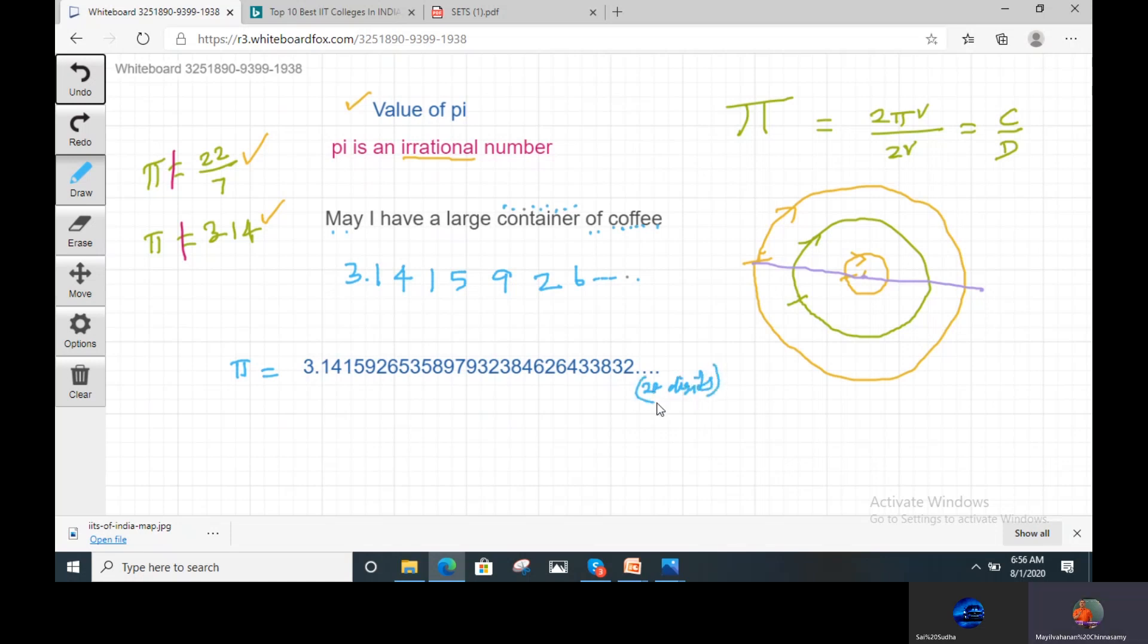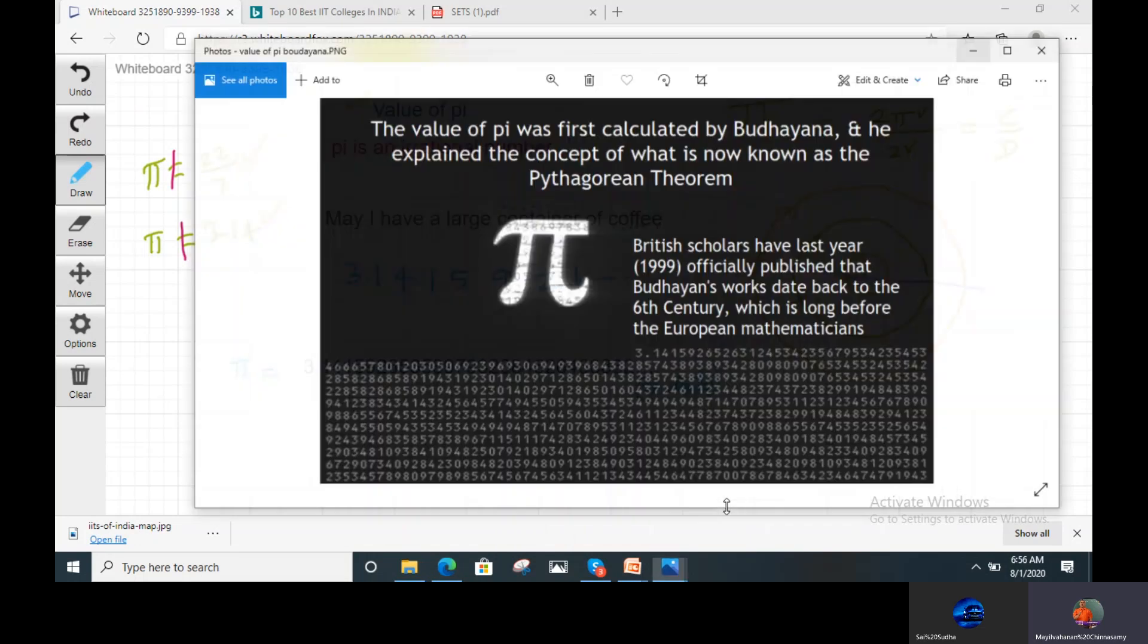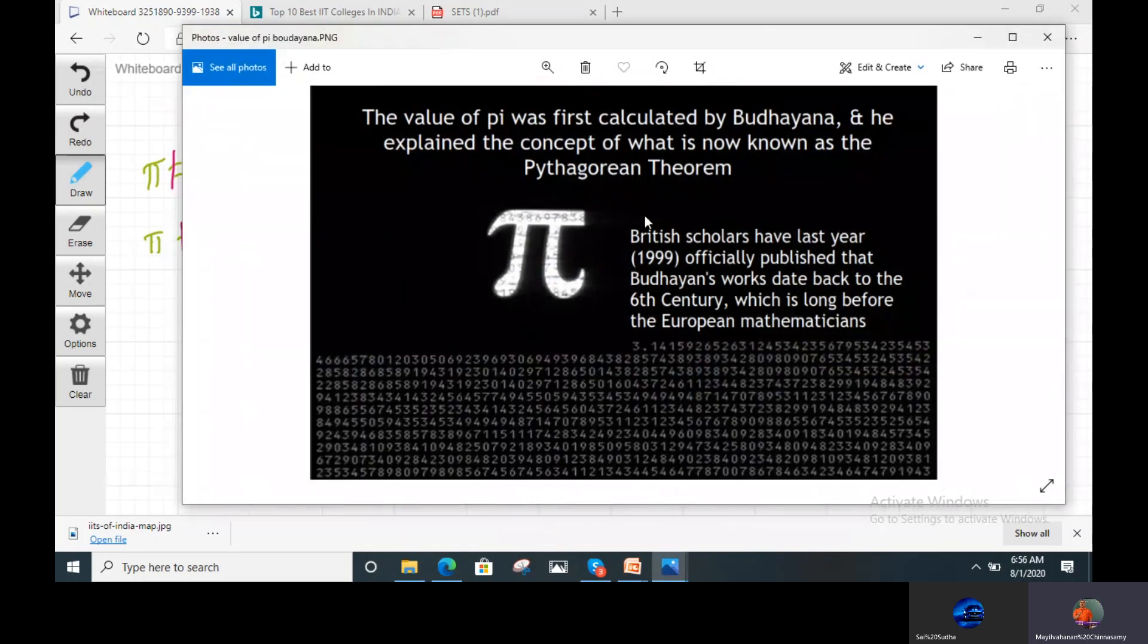But more 100 digit approximation value also there. It is challenging, you know, see the pi value.